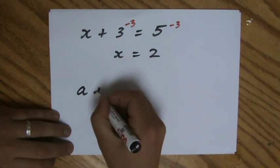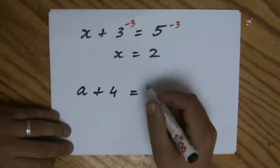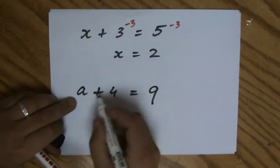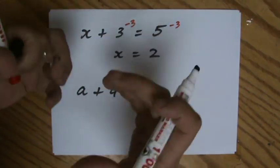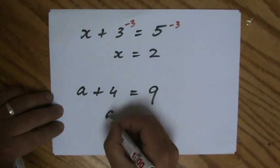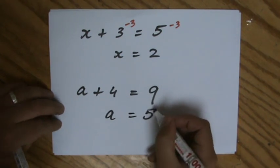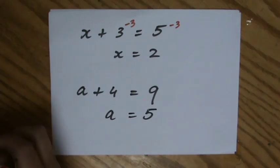let's say a plus 4 equals 9. So which number plus 4 is 9? And then you start thinking, and some still use your fingers, that's fine. Then you say, well, a is 5, because 5 plus 4 is 9.